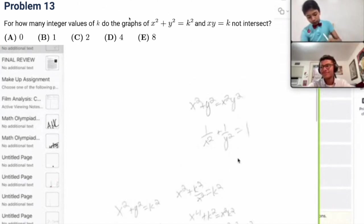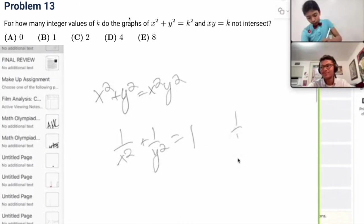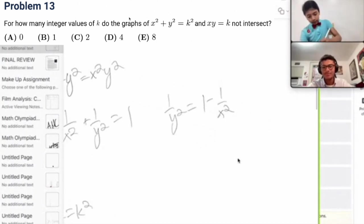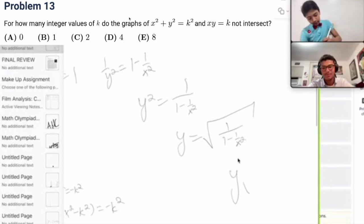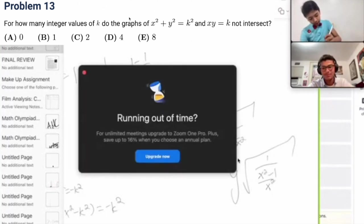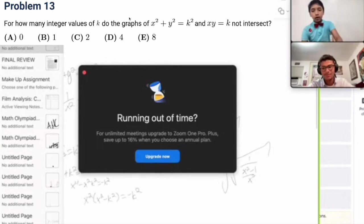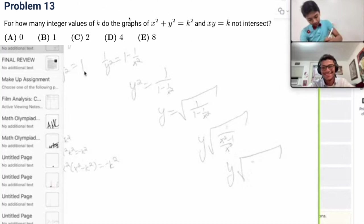Okay. So, one over y squared equals one minus one over x squared. So, y squared equals one over one minus one over x squared. The y is the square root of that. Well, obviously, that's not very tidy. So, one over x squared minus one over x squared. Oh, come on. Running out of time?